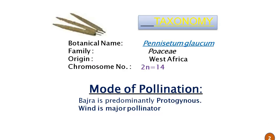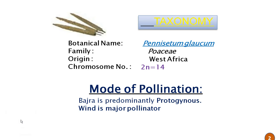Let us see first what is the taxonomy of the pearl millet or Bajra. The botanical name of Bajra or pearl millet is Pennisetum glaucum and the family is Poaceae. The origin is in West Africa and the chromosome number (diploid, 2N) is equal to 40.